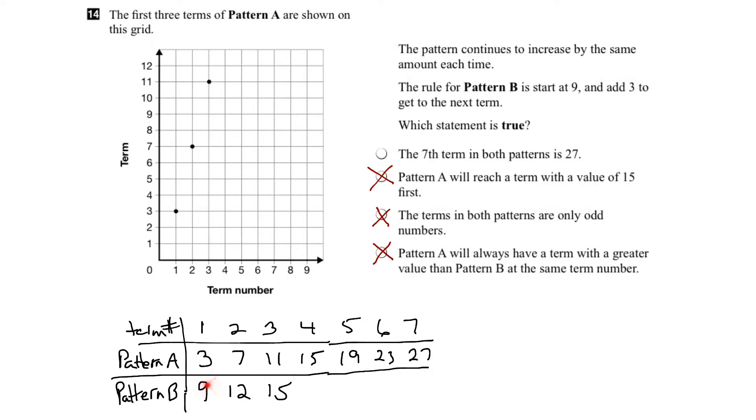For Pattern B, we're going up by 3 each time. So 9 plus 3 is 12, plus 3 is 15. If we extend that, the next term would be 18, then 21, then 24, and then 27, going up by 3 each time. Let's look at the value for the 7th term. It is indeed 27 for both patterns. Therefore we know that statement is the right answer.